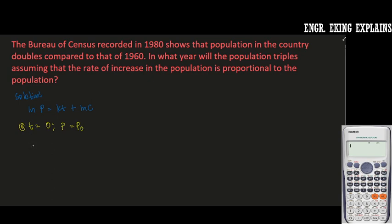So the equation ln P equals KT plus ln C. We need to substitute the given, so we have ln P0 is equals to K times 0 plus ln C, so this will be equal to 0.